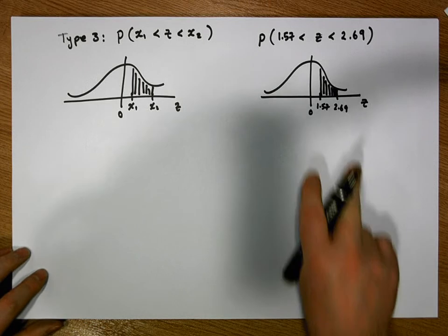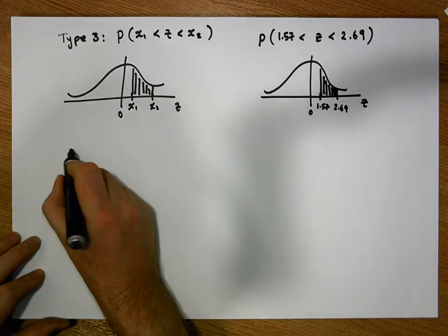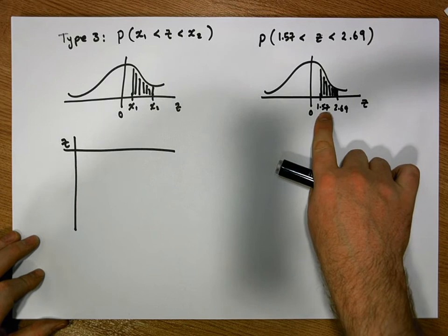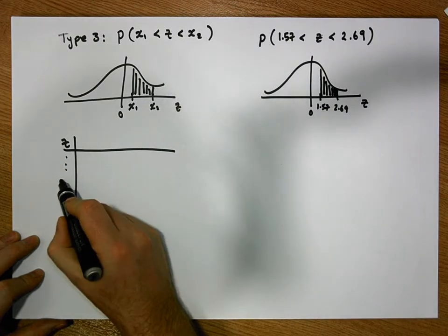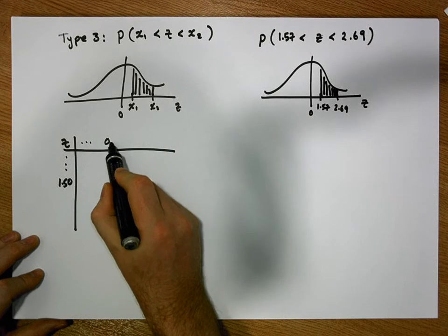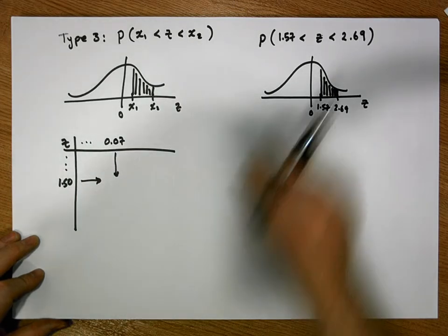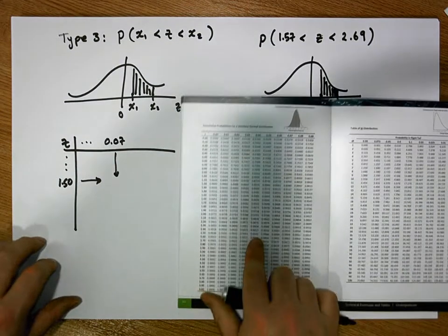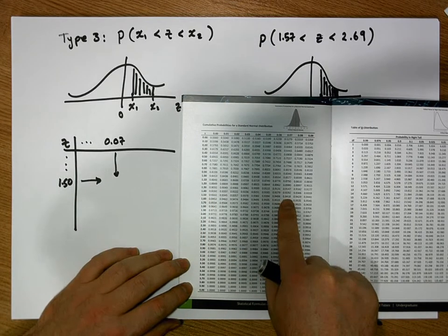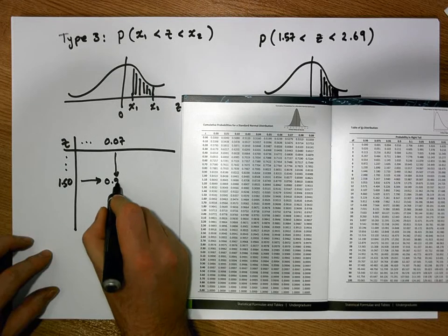Like our type 1 and type 2 probabilities, any time we calculate areas with respect to positive values, we look these values up directly on our z-tables. For 1.57, the first significant digit and first decimal digit is 1.5, so we come down to 1.50. The second decimal digit is 7, so we come across to 0.07. Triangulating on our tables gives us the area to the left of 1.57, which is 0.9418.